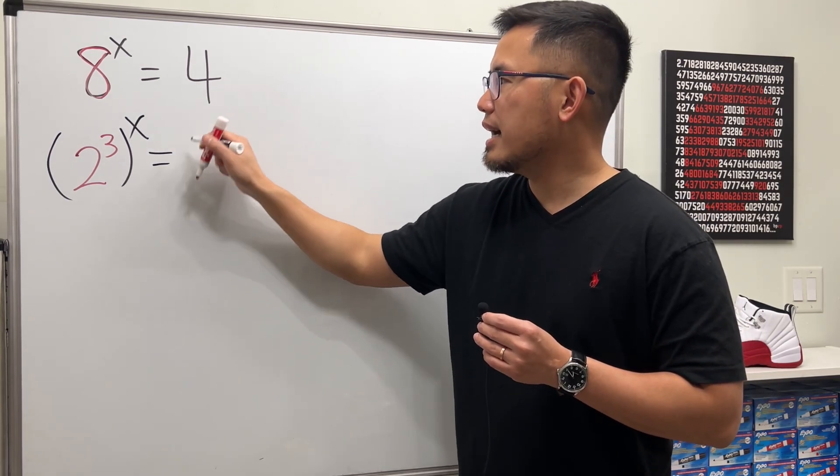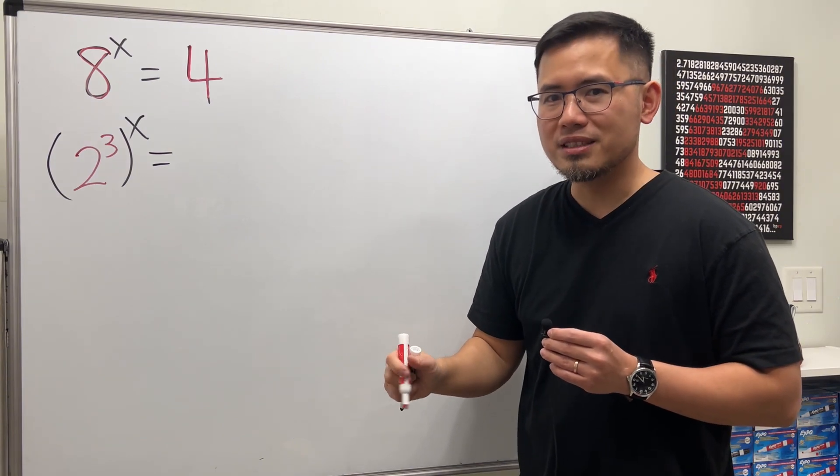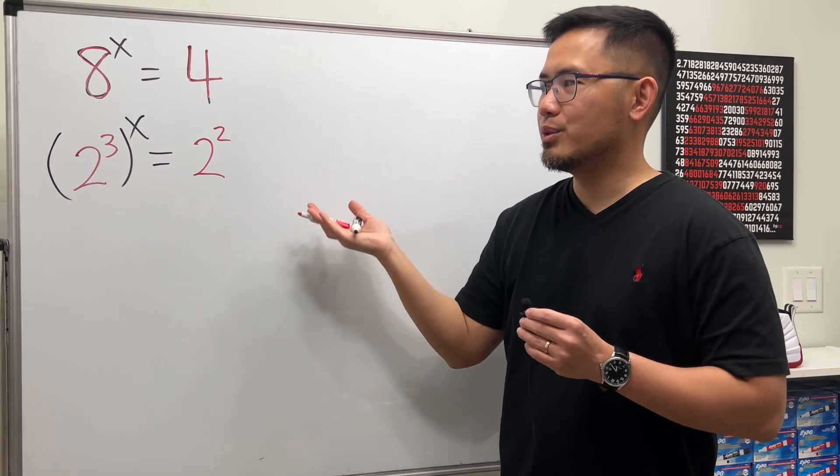Now on the right hand side we have 4, so can we write 4 as a power also? Yes, because we know 2 times 2 is equal to 4, so that means 2 to the second power is equal to 4.